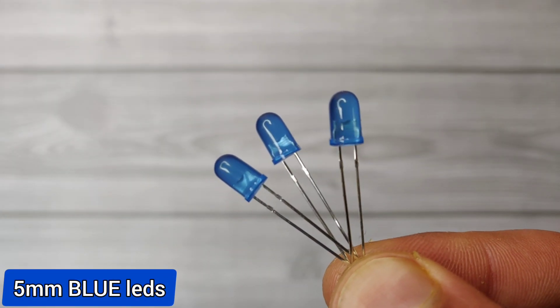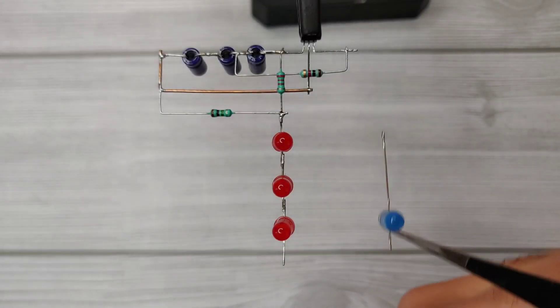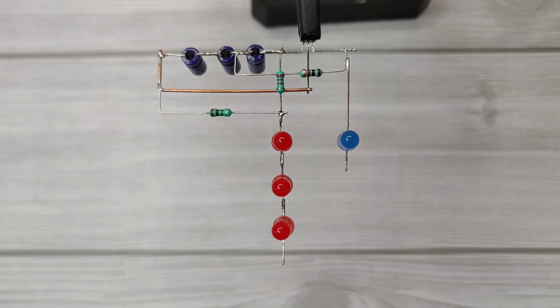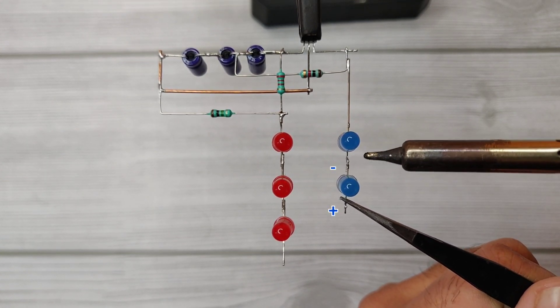Take three pieces of blue LEDs. Solder the LED negative with the emitter of the transistor and solder the other two LEDs in series.